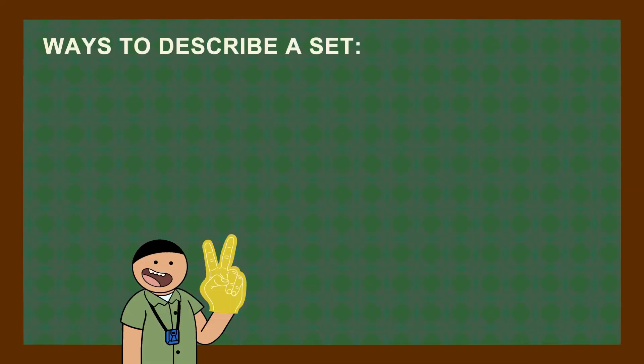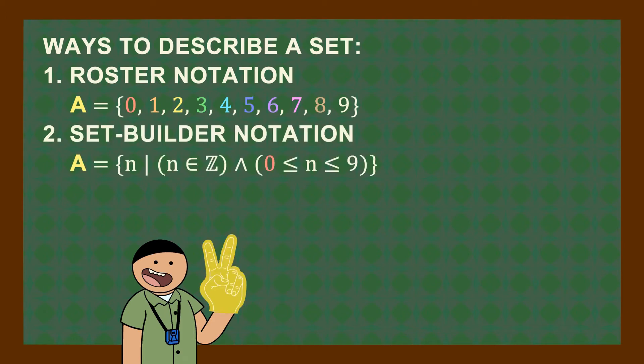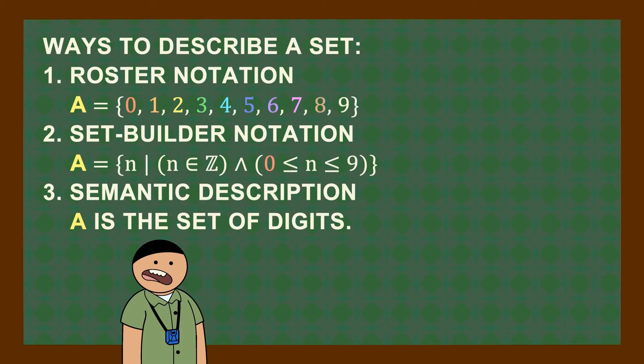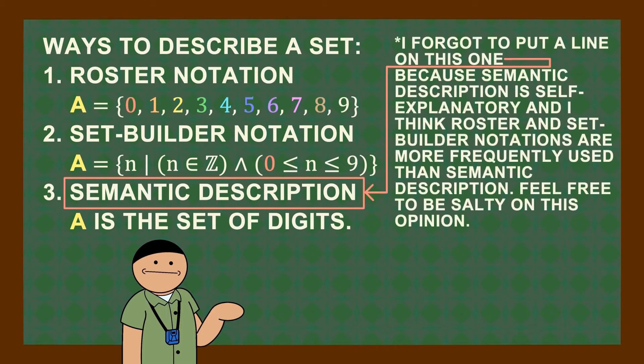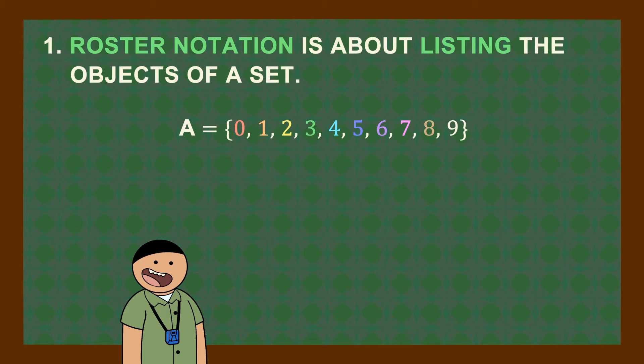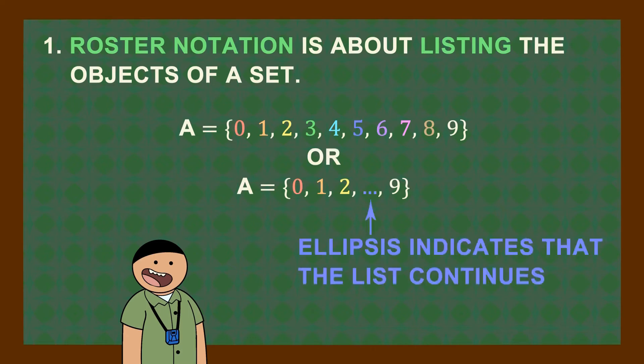Describing a set has two ways: roster notation and set builder notation. I know another way of describing a set is using a description but... Roster notation is about listing the objects of a set like this. When a list is too long, an ellipsis is used to indicate that the list goes on.